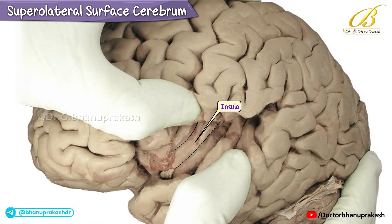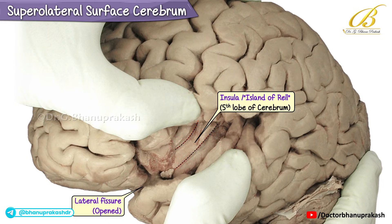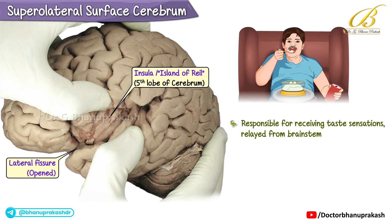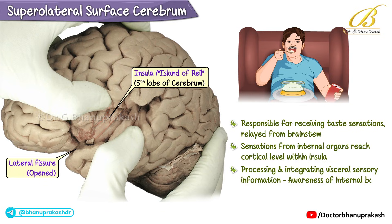The insula is considered the fifth lobe of the cerebrum, also referred to as the island of Reil. The lateral fissure has been opened, revealing the insula beneath the cortical tissue. The function of this cortical area has been subject to debate; however, it is believed the insula is responsible for receiving taste sensations relayed from the brain stem. Sensations from internal organs may also reach the cortical level within the insula, contributing to our awareness of internal bodily states.